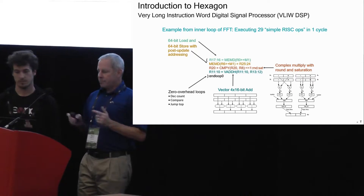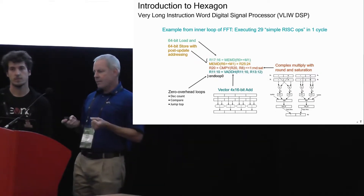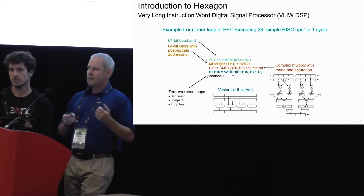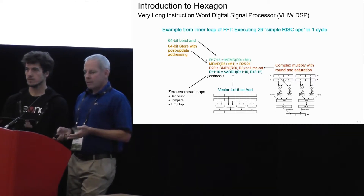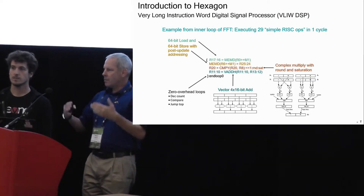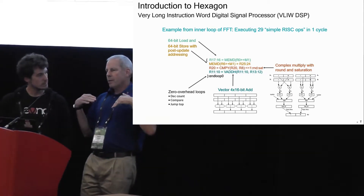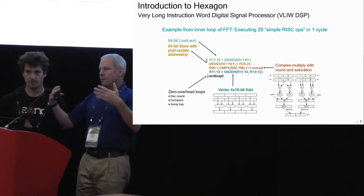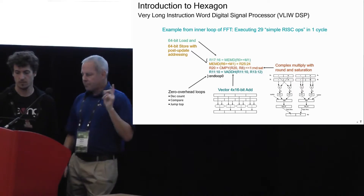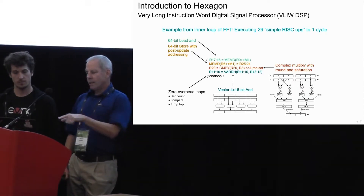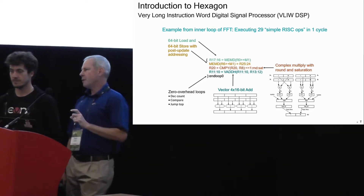Let's look at what the assembly syntax looks like. If you don't look too closely, you might think it's C code — the instructions are algebraic, with the destination on the left, an equals sign, then something like a function call with the opcode and operands in parentheses. Curly braces indicate all those instructions execute in parallel: they all read operands, perform operations, and write results simultaneously. This packet has four instructions plus an end loop, and is part of the inner loop of FFT for Hexagon.